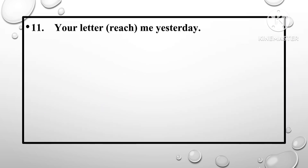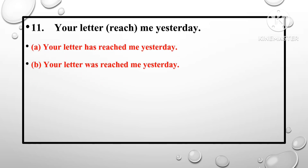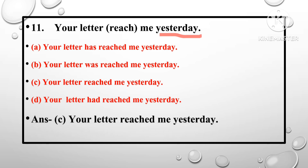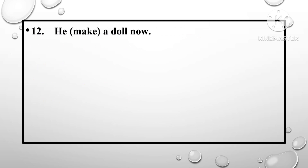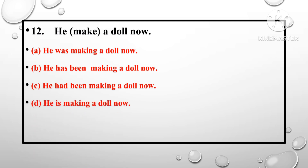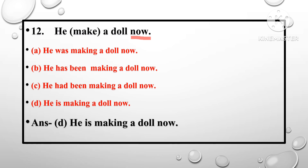Question number 11: 'Your letter reached me yesterday.' Options: has reached; was reached; reached; had reached yesterday. Question number 12: 'He make a doll now.' Options: he was making; he has been making; he had been making; he is making a doll now. Since 'now' indicates present continuous tense, D — 'he is making a doll now' — is the correct answer.